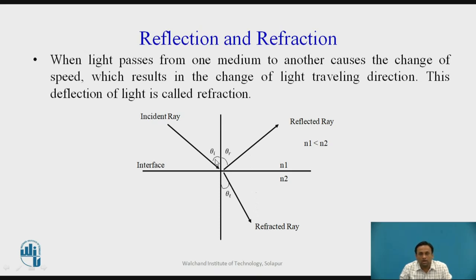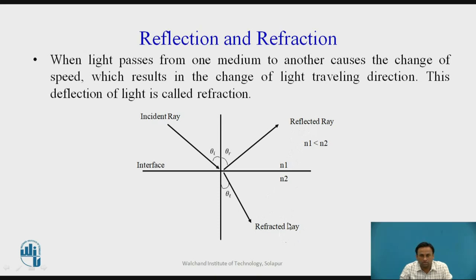Theta-i is the angle of incidence and theta-r is the angle of reflection. Whenever the incident ray is reflected back with the same angle, that is the reflected ray. When lower-density medium light passes into a denser medium, the deflection — theta-t — is called the refracted ray, because the speed and angle both change. We are interested in how light will remain inside the optical fiber only, so we need to understand total internal reflection.